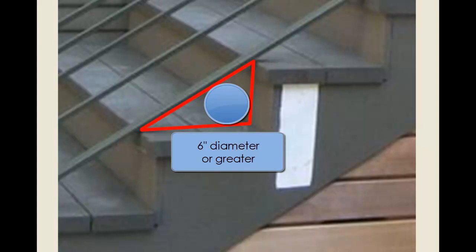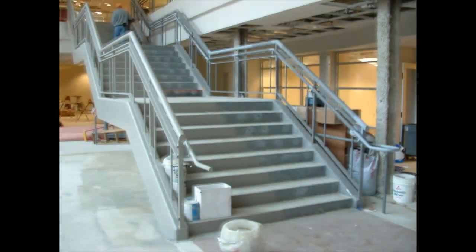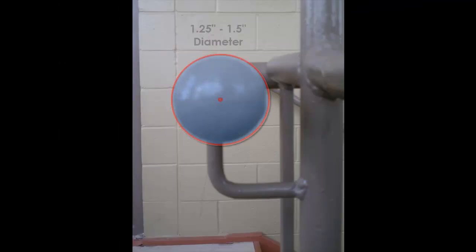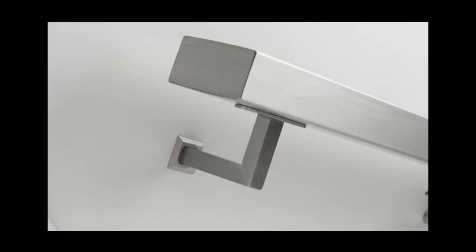All commercial stairs, regardless of their location, are required to have handrails on both sides. ADA requires these rails to be between 1 1/4 and 1 1/2 inches in diameter, or if they are not round rails, the shape shall provide an equivalent sized gripping surface.